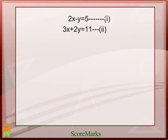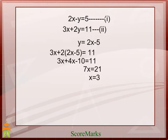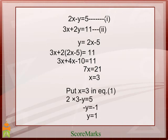From the first equation, we take out the value of y. That is, y is equal to 2x minus 5. And substitute it in the second equation in place of y. After getting the value of x, substitute that value in any given equation to get the value of y. This is the substitution method.